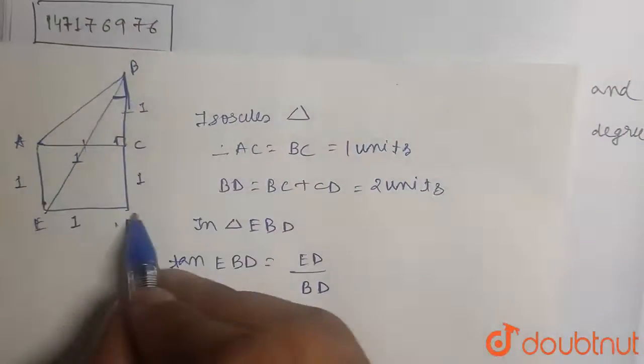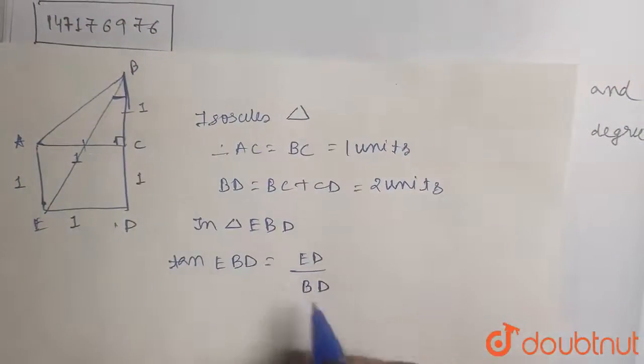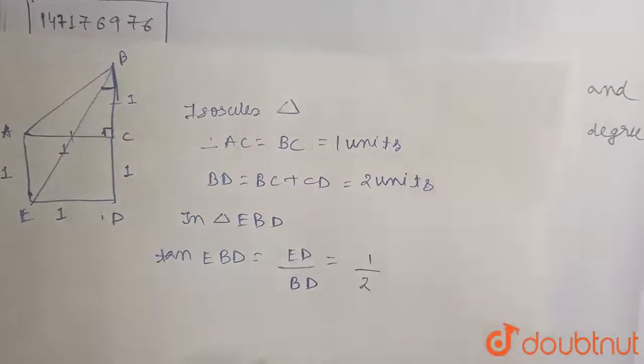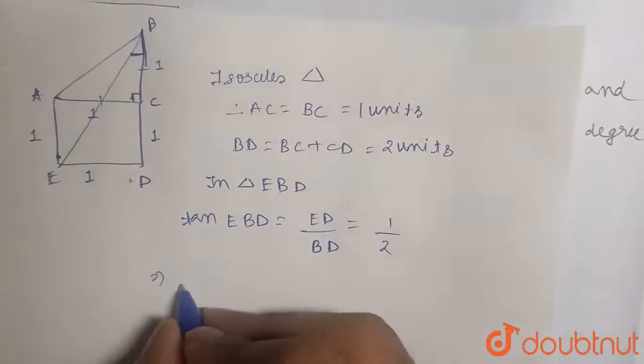You see, in this triangle the value of tan B will be ED divided by BD. So we just put the values. ED is how much? One unit. And BD is how much? We've already calculated to be two units. So the angle EBD...